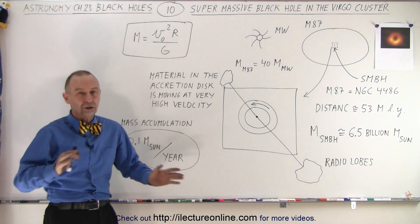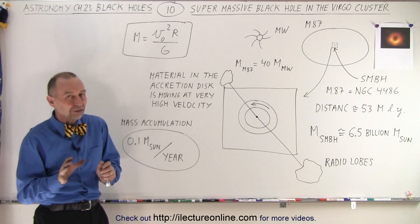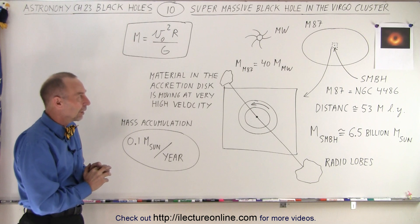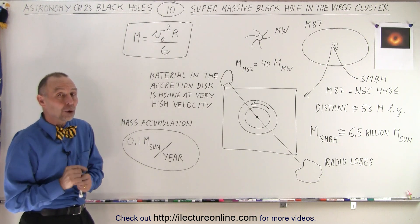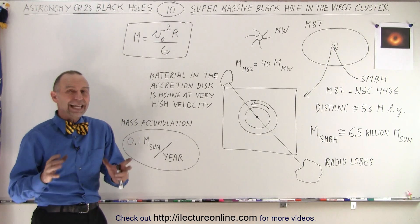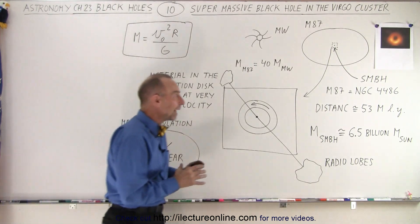Now the Virgo cluster is a cluster of galaxies and has about 2500 galaxies, and one of them is M87. At the very center is a black hole, and just recently within the last year or so they've actually taken a picture of the black hole.